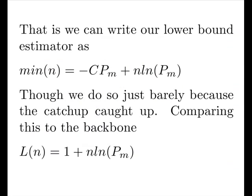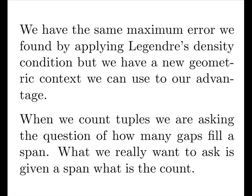That is, we can write our lower bound estimator as minus P of the same form. But we do so just barely because the catch-up caught up. So that is, it's sort of barely getting up to here. Comparing this to our backbone, we see it's two parallel lines. We have the same maximum error we found by applying Legendre's density condition, which kind of came about for a different reason. So this is nice. But we have a new geometrical context that we can use to our advantage.